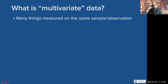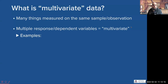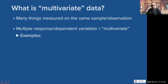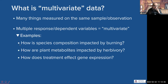So first off, what is multivariate data? Essentially it's just when we've measured many things on the same sample or observation. There are actually two things going on here. Technically, when we have multiple response variables, this is multivariate data. That would be things like: how is species composition impacted by controlled burns?